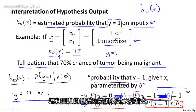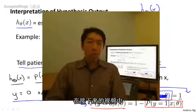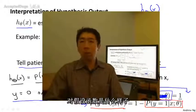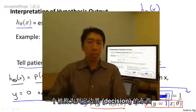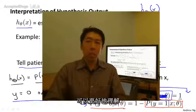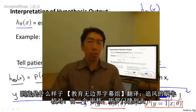So you now know what the hypothesis representation is for logistic regression. And we've seen what the mathematical formula is defining the hypothesis for logistic regression. In the next video, I'd like to try to give you better intuition about what the hypothesis function looks like. And I want to tell you about something called the decision boundary. And we'll look at some visualizations together to try to get a better sense of what this hypothesis function of logistic regression really looks like.